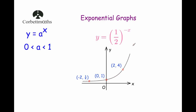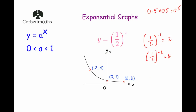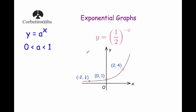So to summarise: if you have y equals a to the power of x and a is bigger than 1, it will start off very small, increase, pass through 1, and then get very big very quickly. If a is between 0 and 1, it will start off very big, decrease, pass through 1, and get closer and closer to the x-axis. If it's a negative power, it will be a reflection — so y equals 2 to the power of negative x would be a reflection of the normal graph, and likewise for y equals a half to the power of negative x.